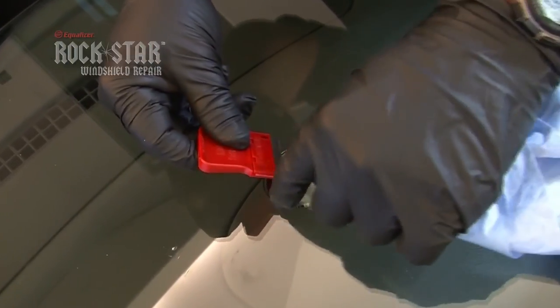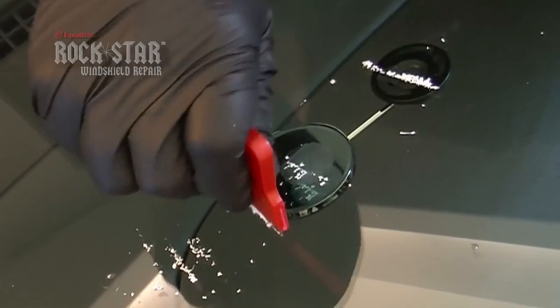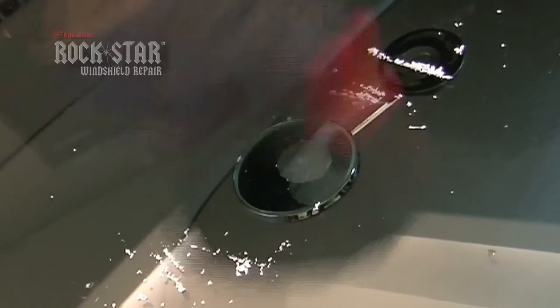Remove the mylar square cure sheet. With the use of a new razor blade, scrape the cured resin in a back and forth up and down motion until the resin is even and level with the windshield.